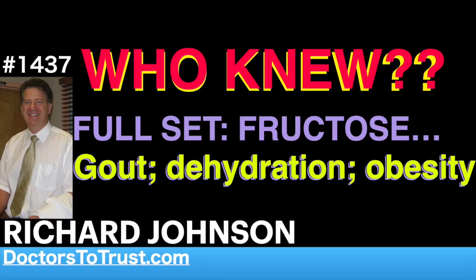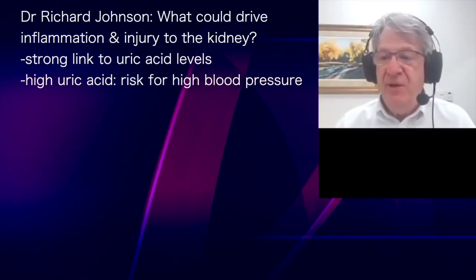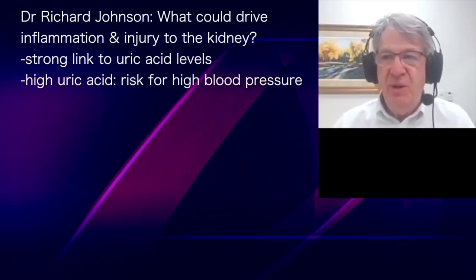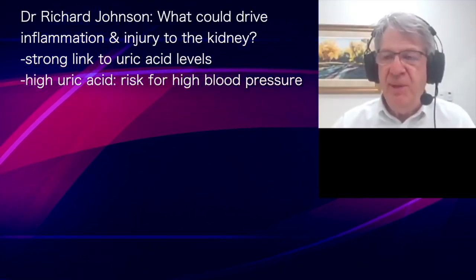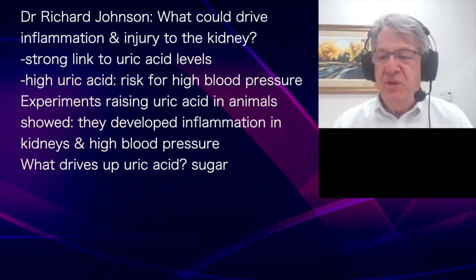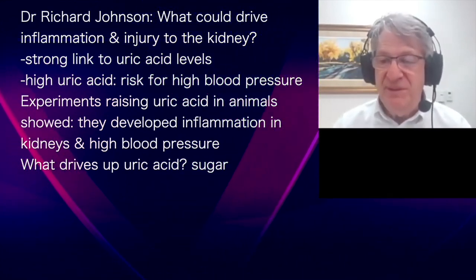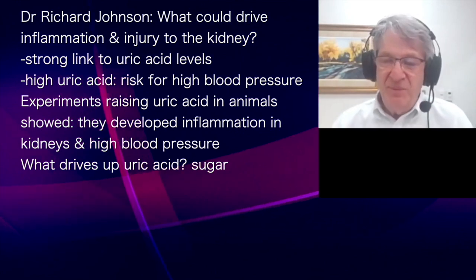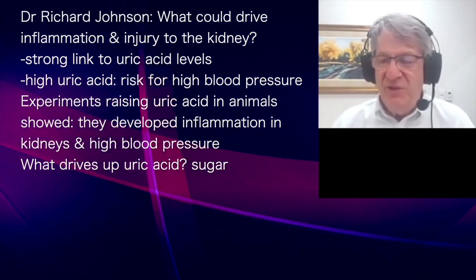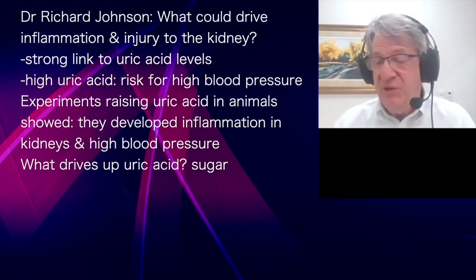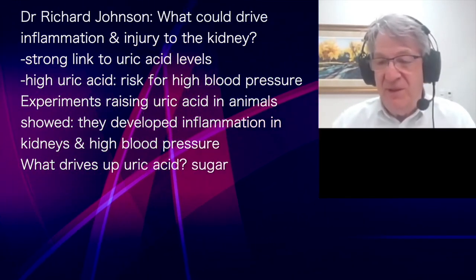I started looking for what could drive the inflammation and injury to the kidney. I realized there was a very big linkage with uric acid, and people with high uric acid were really at increased risk for developing high blood pressure. We started doing experiments by raising uric acid in animals, and suddenly found that those animals developed mild inflammation in their kidneys and high blood pressure just by raising uric acid.